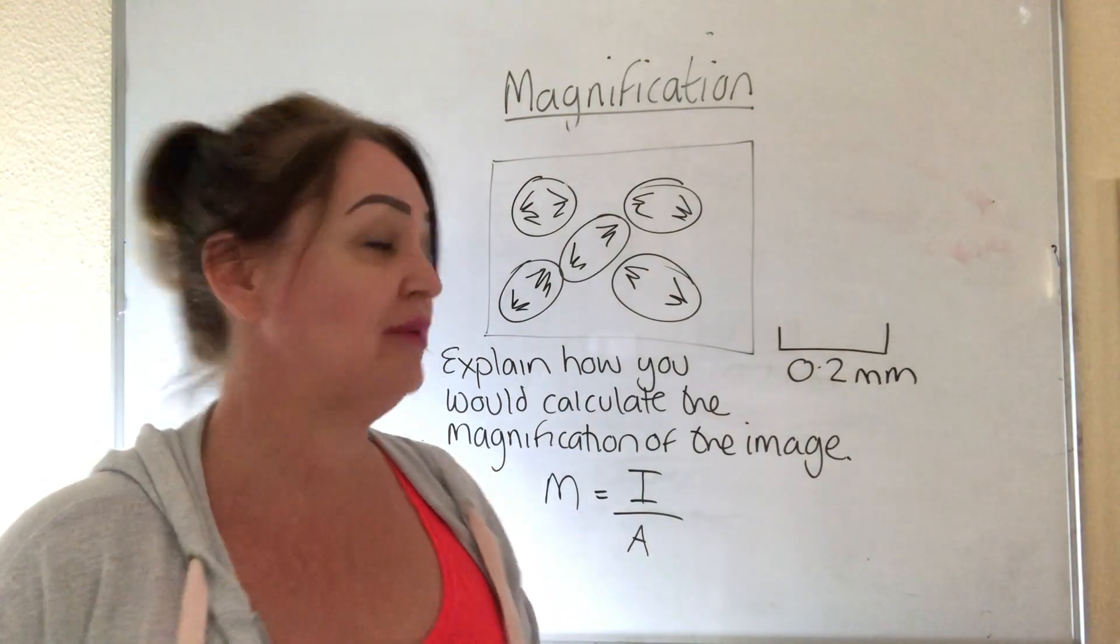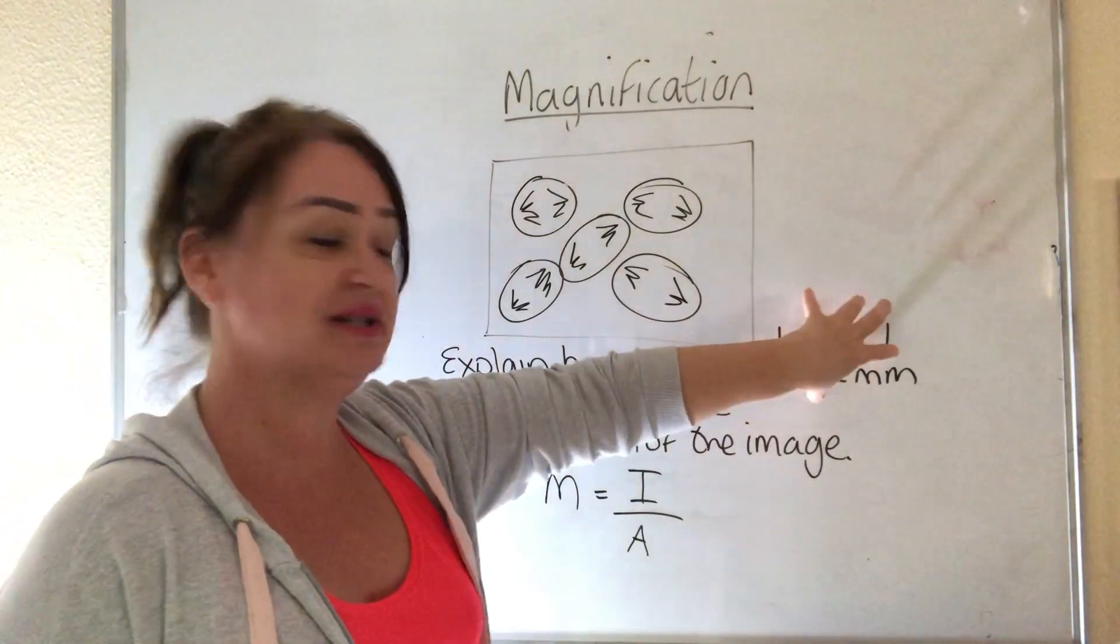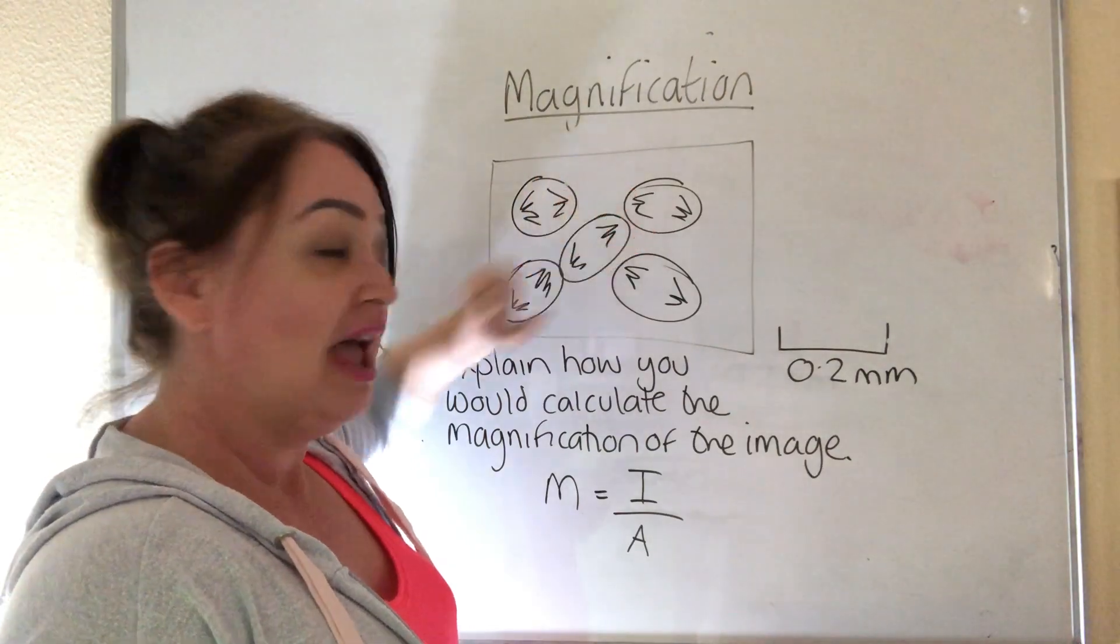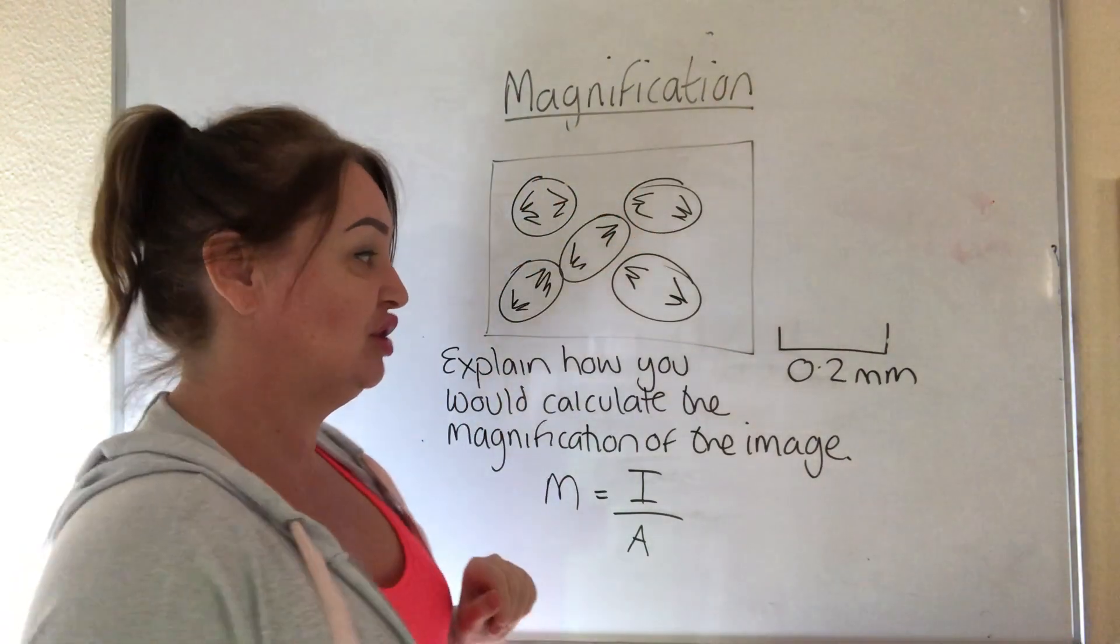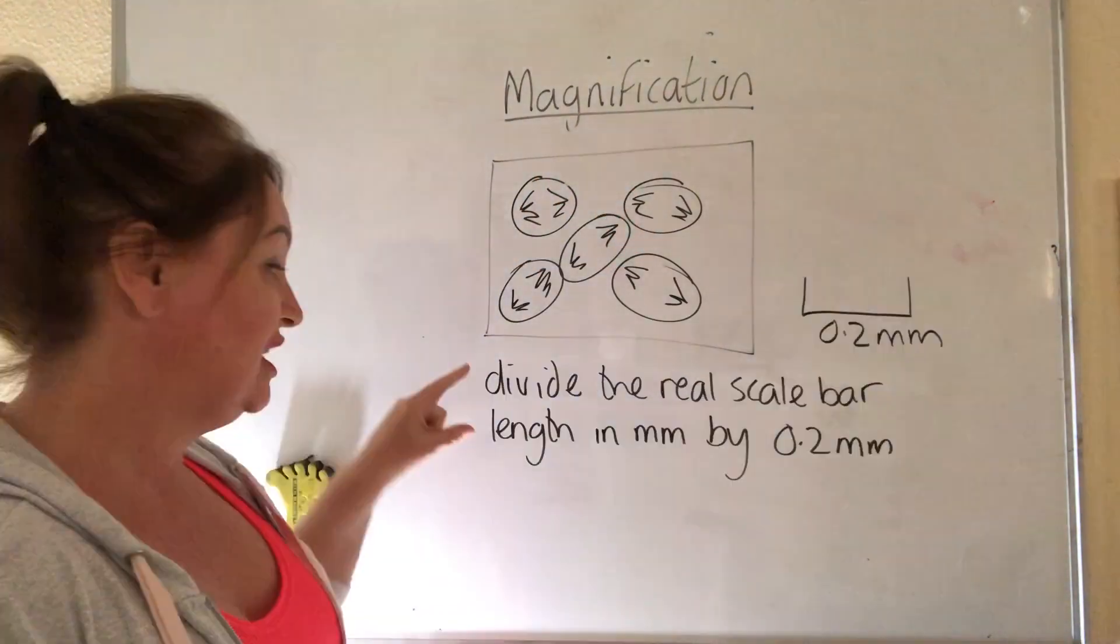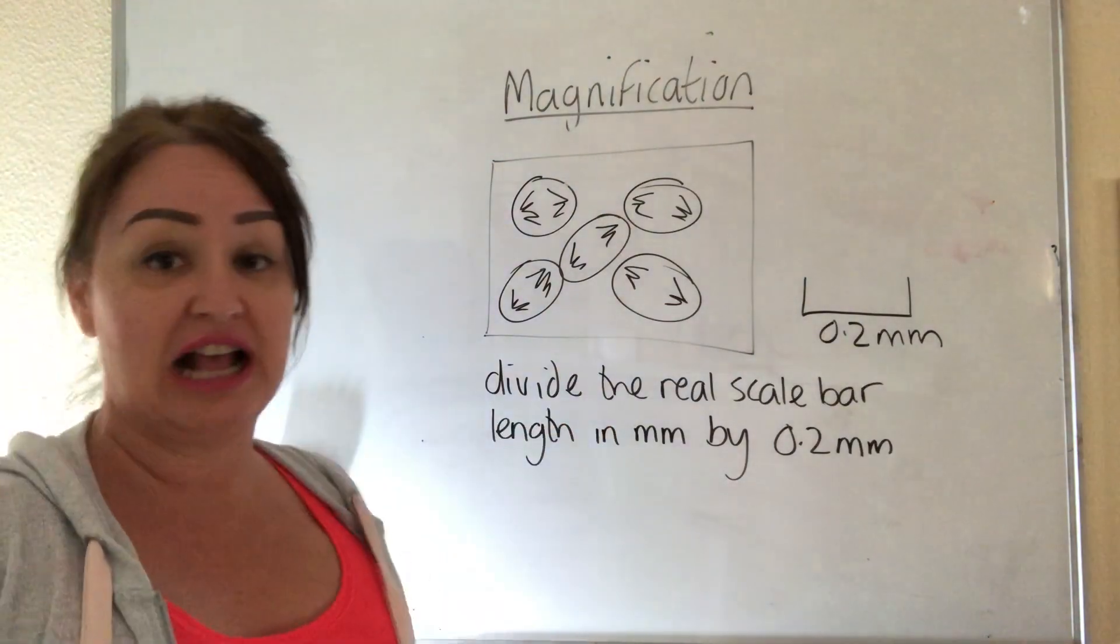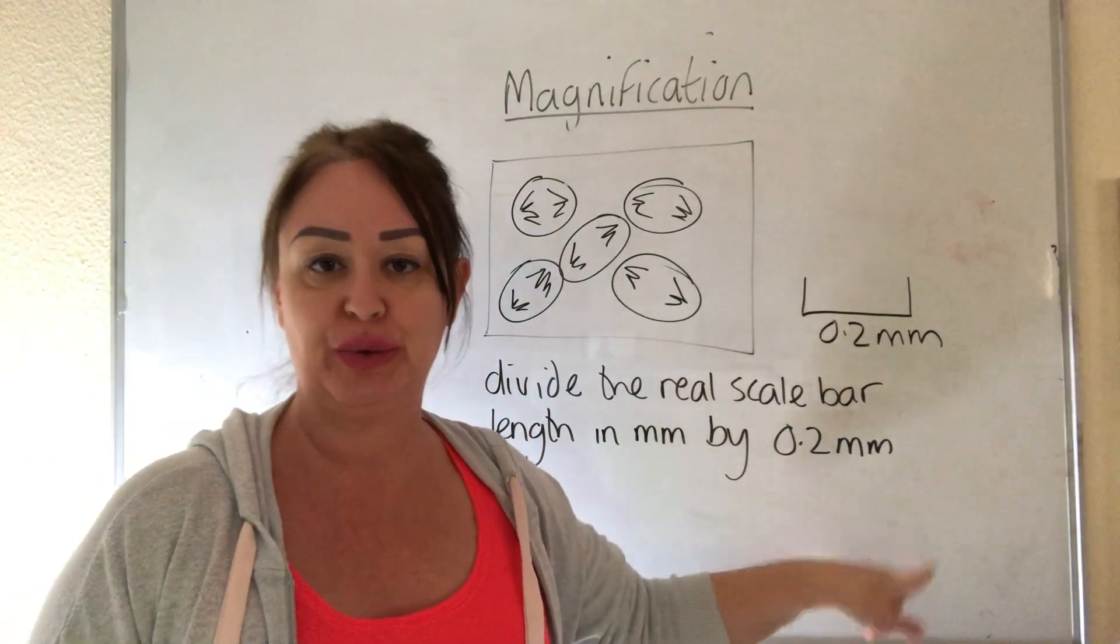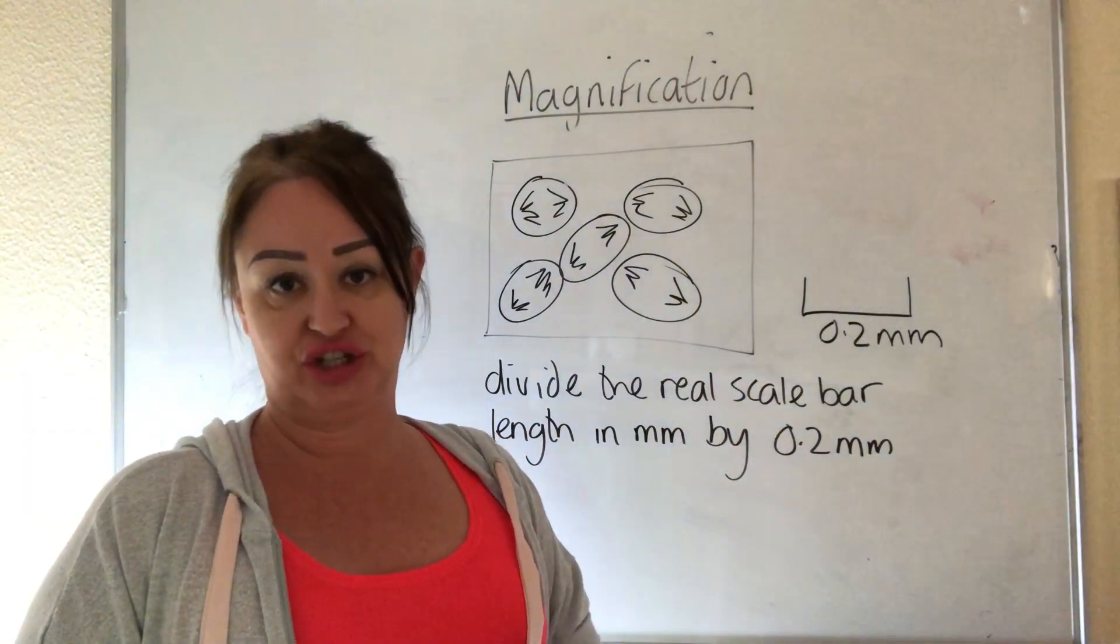Well if you've watched my previous video you will have learned that as soon as you see a scale bar you do not need the image. And so in answer to this question we would write divide the real scale bar length in millimeters by 0.2 and that actually answers the question.